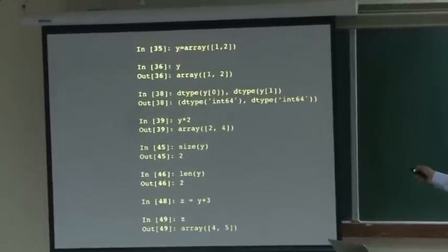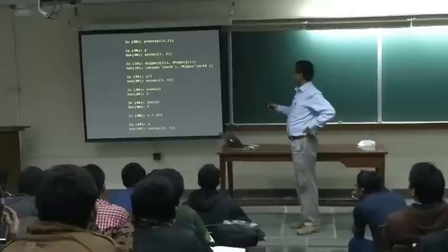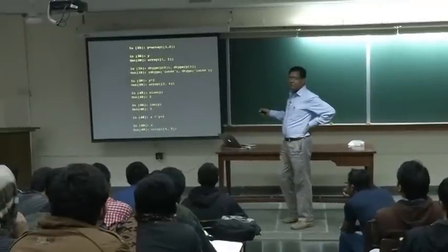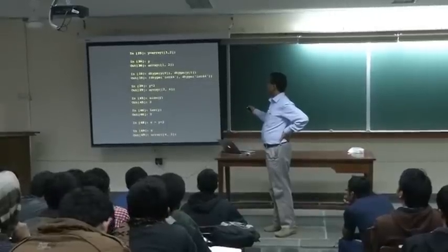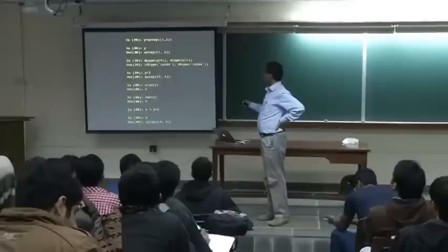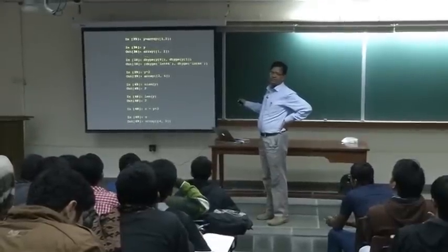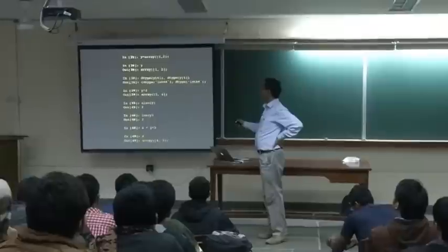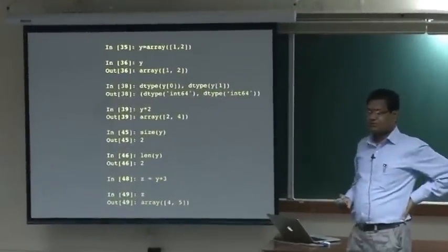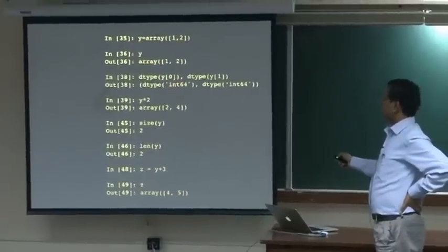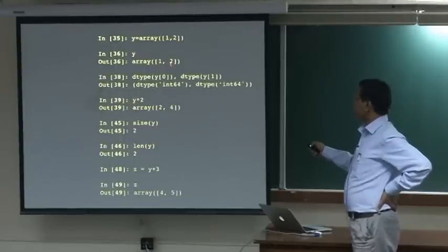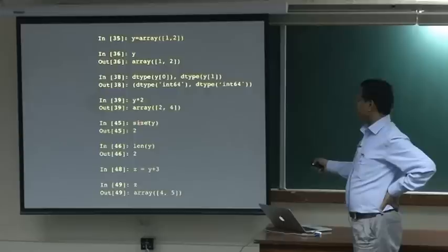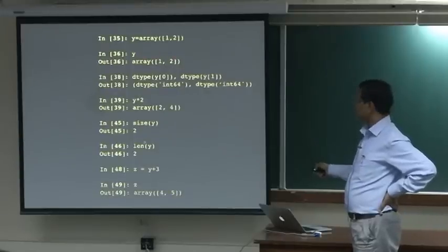If I just say y, y is a variable which contains the array, and it will just print this. You can look at the type of the elements — my elements are y[0] and y[1]. y[0] is the first element and y[1] is the second element. If I want to get the type, I say dtype — data type, d for data — and these are int64, that is 64-bit. y * 2 will multiply each element by 2. I can get the size of this array: number of elements is 2, and length also gives you the same answer.